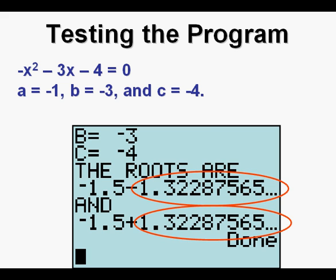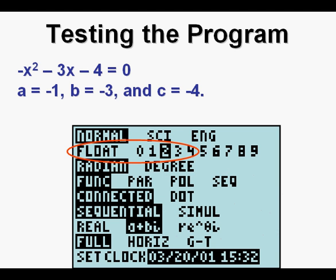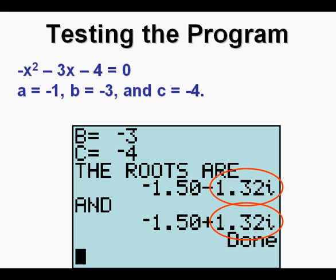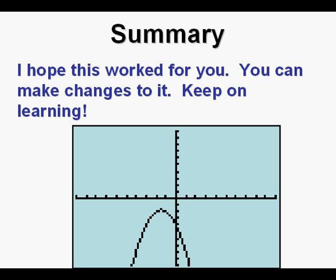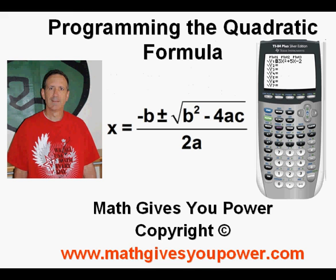We cannot see the italic i at the end of the terms. In order to see the i's, go back to the Mode menu and change the decimal places from Float to 2. With decimal places set to two, the complex number solutions now appear with the imaginary portion rounded to two decimal places — negative and positive 1.32 with the italic i visible. Keep using this program; you can make changes to it if you'd like. Keep on learning. This has been Programming the Quadratic Formula. Thanks for viewing.